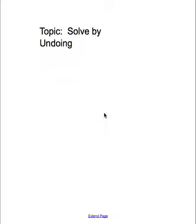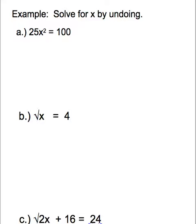Equations by undoing. There are a few examples here on this slide. The first example to solve for x, we have 25x squared equals 100. We want to undo until we get x by itself.